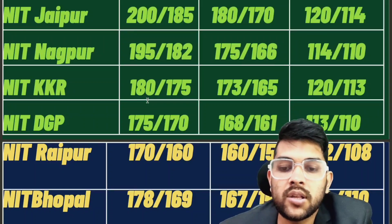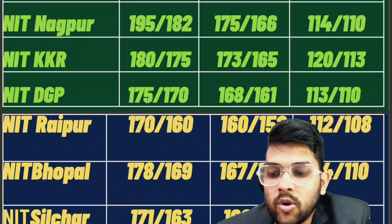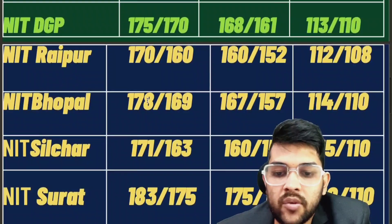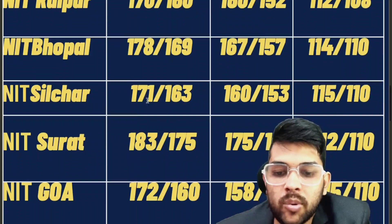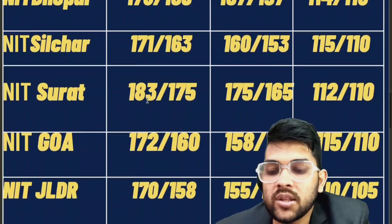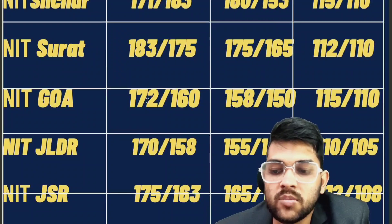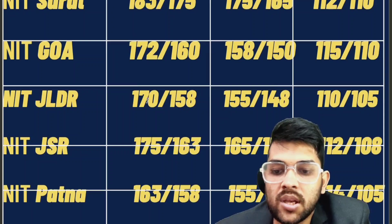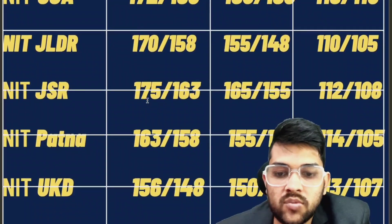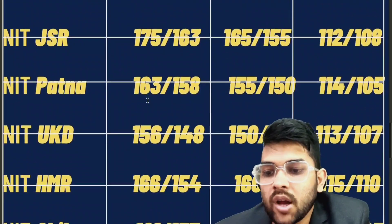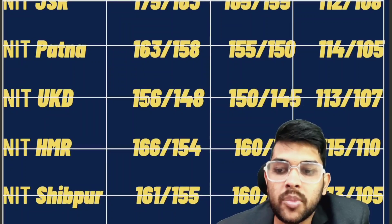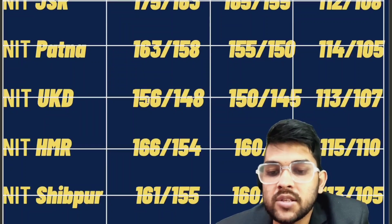For NIT Silchar, 171 and 160, lowest 150. For NIT Surat, 185 and 175, lowest 112. For NIT Goa, 172 and 158, lowest 115. For NIT Jalandhar, 170 and 155, lowest 110. For NIT Jamshedpur, 170 and 165, lowest 112. For NIT Patna, 163 and 155, lowest 140. For NIT Uttarakhand, 156 and 150, lowest 113. For NIT Hamirpur, 166 and 160, lowest 150 — these are for CSC, EC, and lower branches respectively for male; after the slash you can check for female. All are for other-state status.